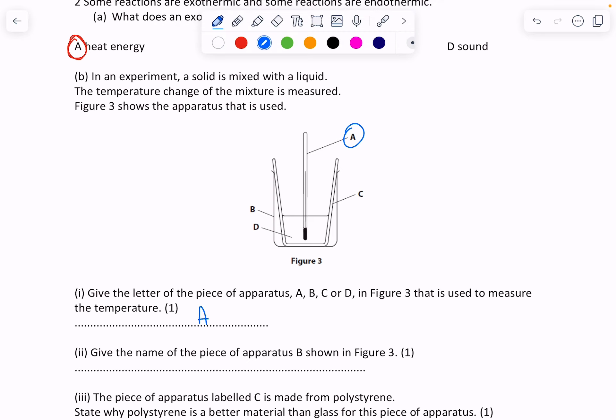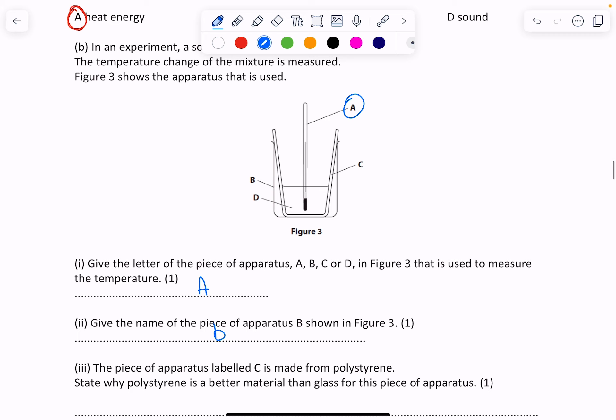Give the name of the piece of apparatus B. So B is a beaker, that's just to hold everything together.